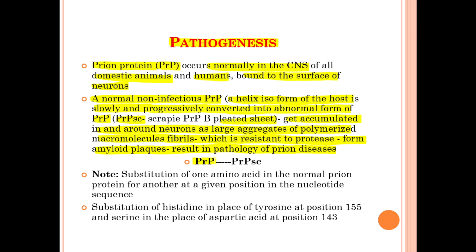Simply, the normal non-infectious PrP converts into the abnormal PrP-Sc. The important note here is that the substitution of one amino acid in the normal prion protein for another at a given position in the nucleotide sequence causes this conversion. Specifically: the substitution of histidine in place of tyrosine at position 155, and serine in place of aspartic acid at position 143.